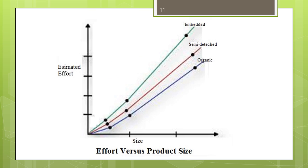Some insight into the basic COCOMO model can be obtained by plotting the estimated characteristics for different software sizes. This graph shows a plot of estimated effort versus product size. From this graph we can observe that the effort is somewhat super-linear in the size of the software product, meaning the effort required to develop a product increases very rapidly with project size.